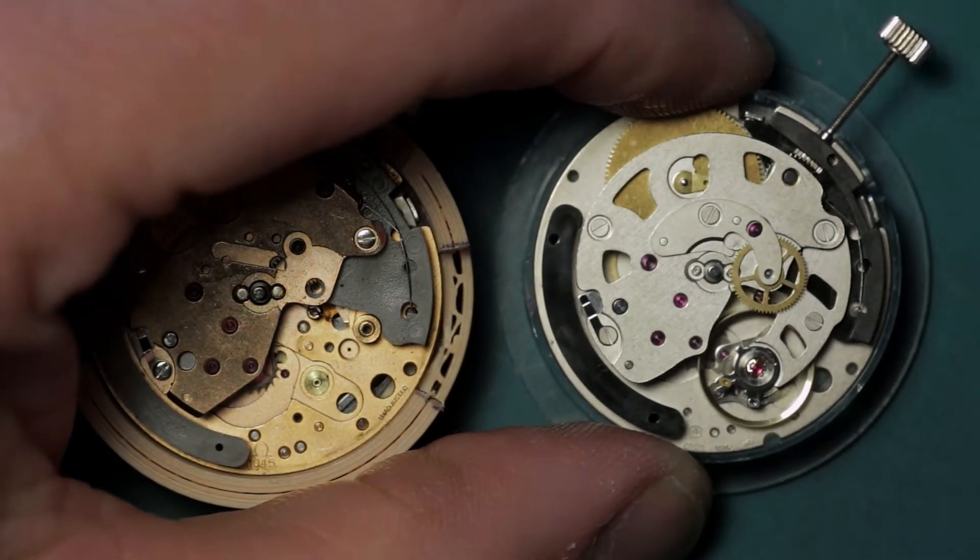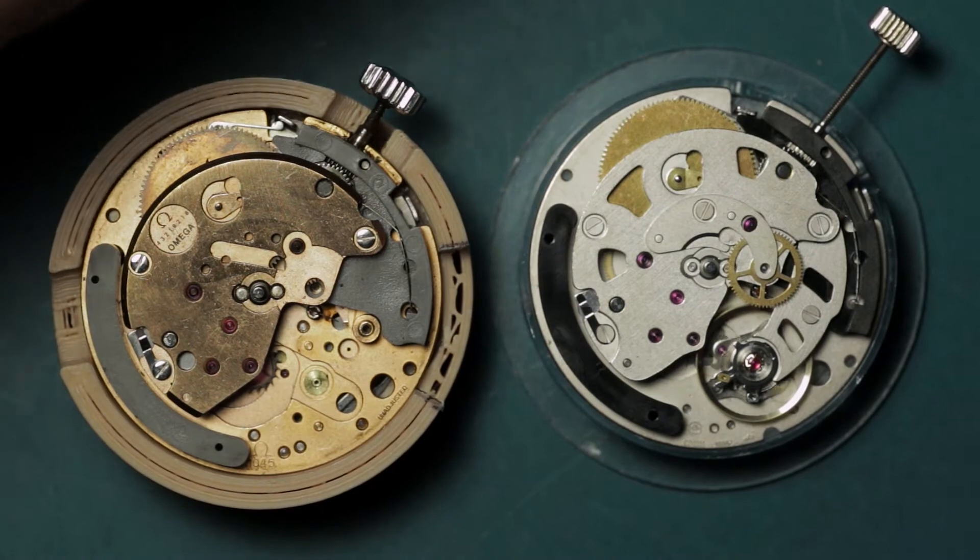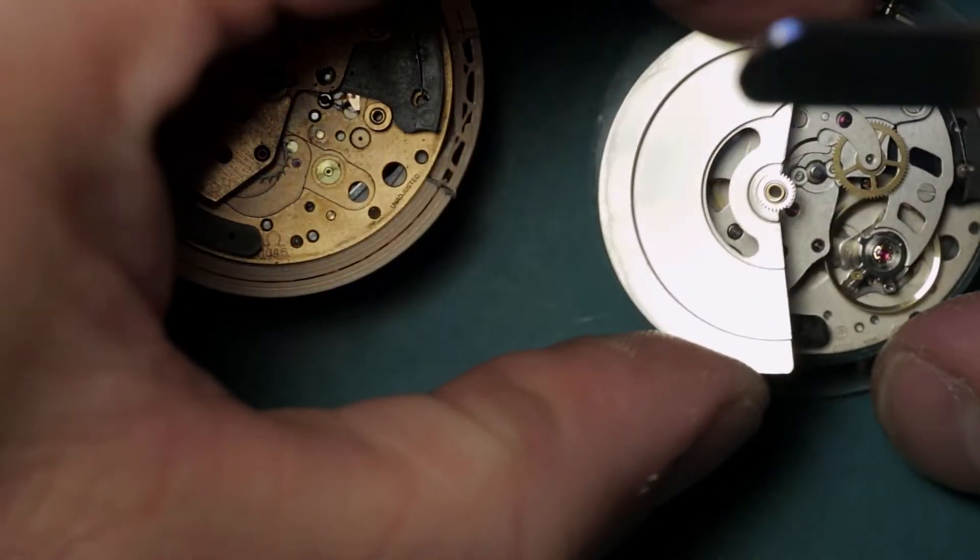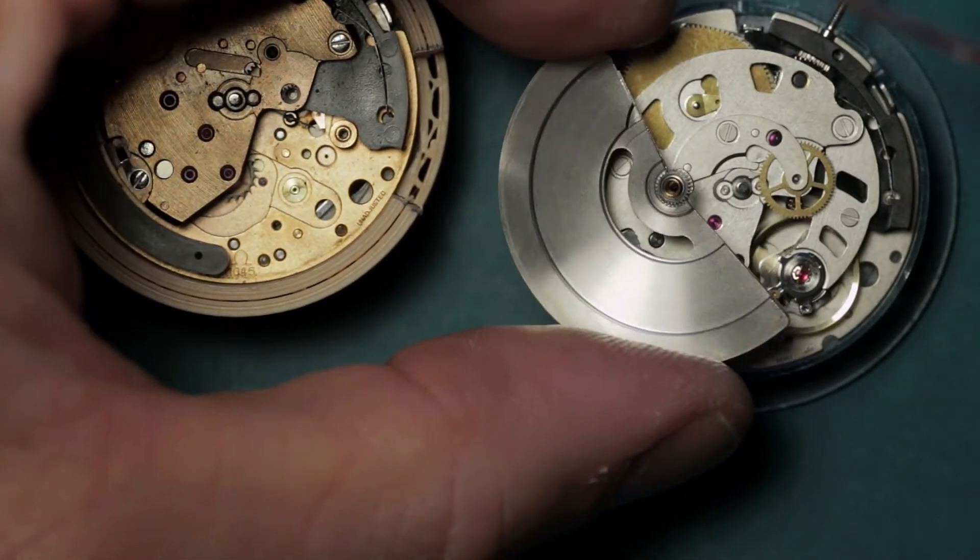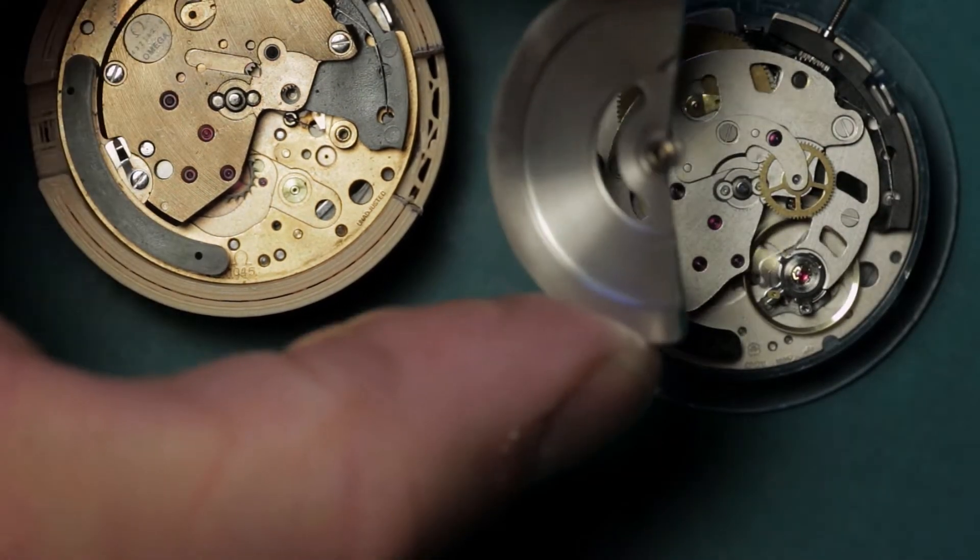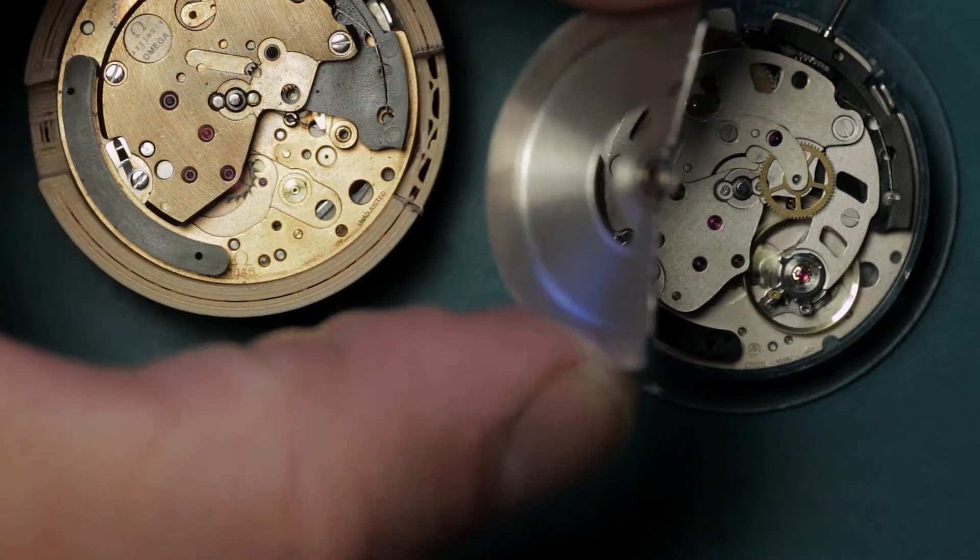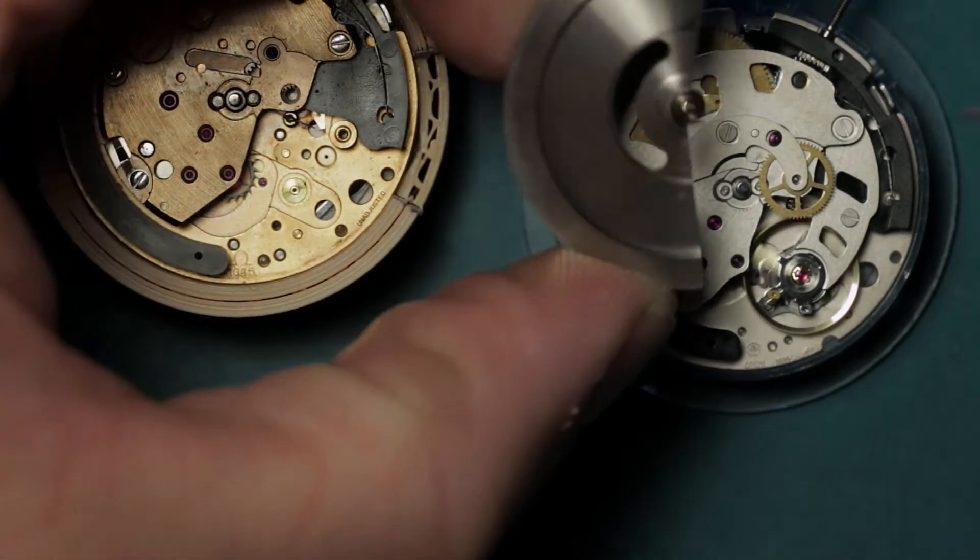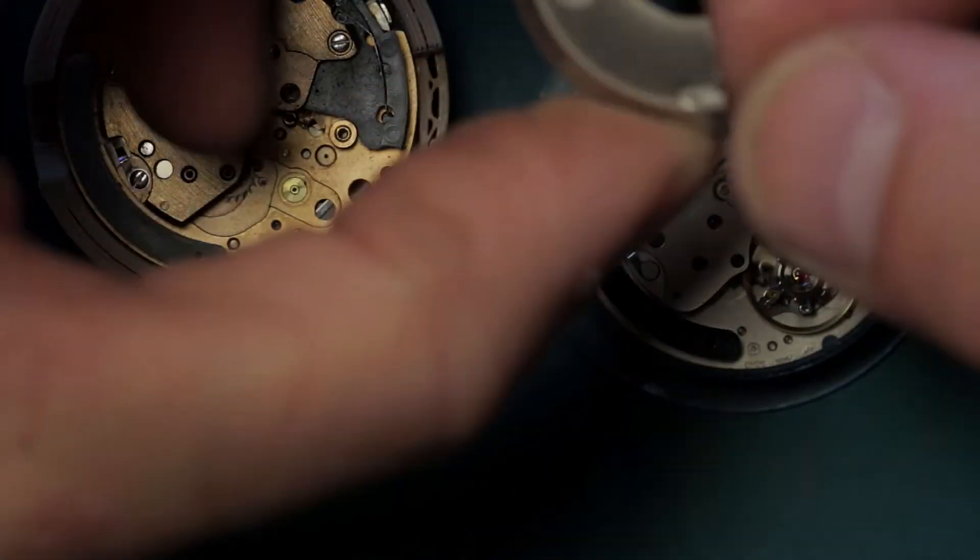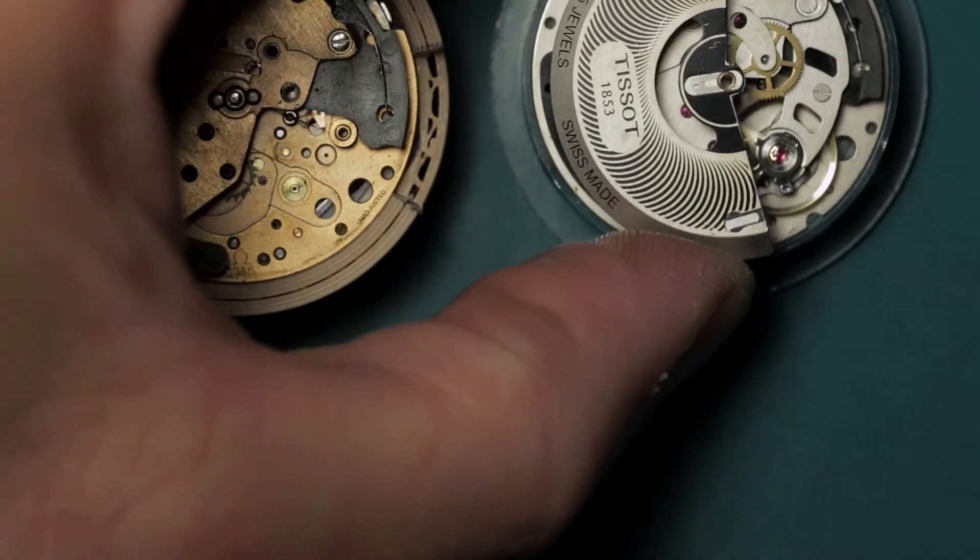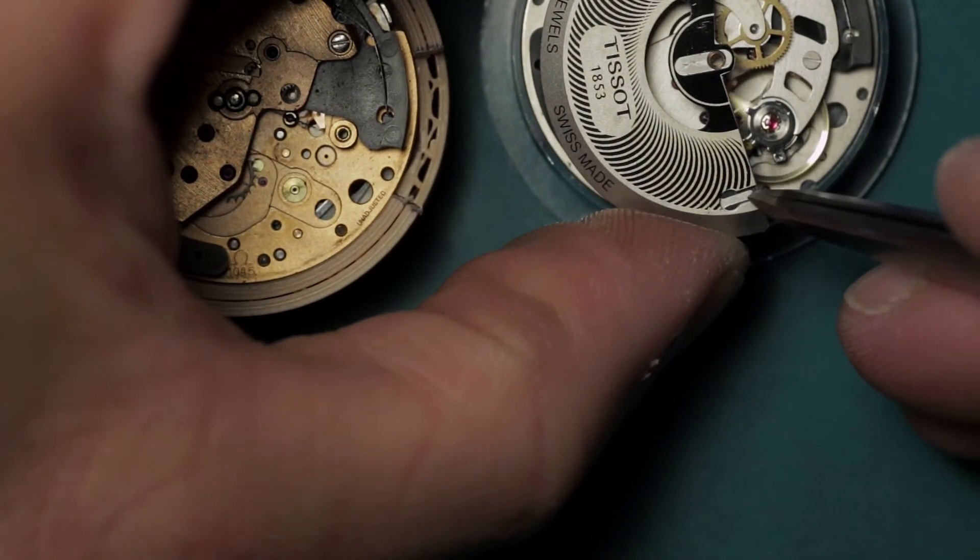And as mentioned, it's a unidirectional mechanism. The way that works again is a simple but very clever system where the oscillating weight on one side of it has a spring. Now on this particular model, on the Tissot, on the Co1211, it's simply held in by a clip just here—it slides in, snaps into place.